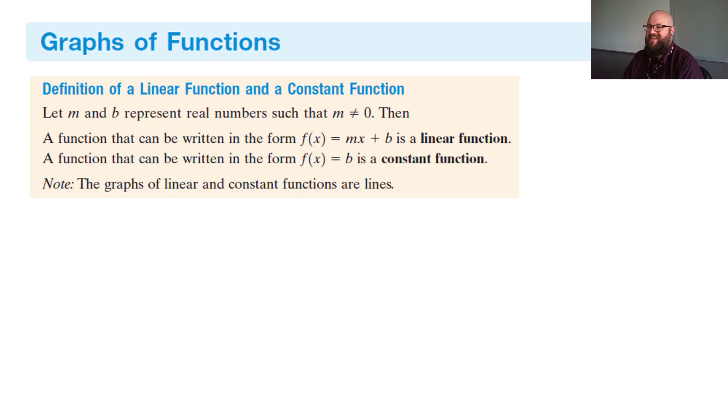We're going to define a linear function and constant function. So let m and b represent real numbers, such that m does not equal zero. A function can be written in the form f(x) = mx + b. That's your linear function, right? M is your slope, and b is your y-intercept.